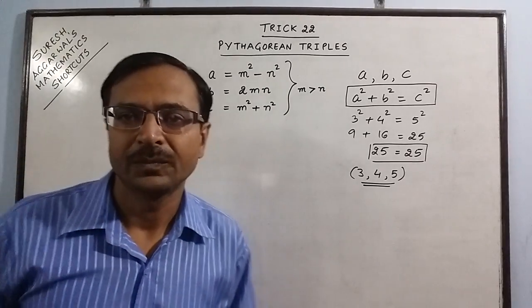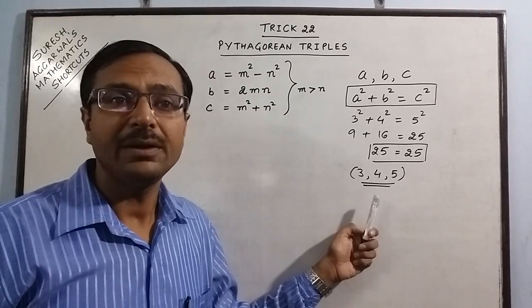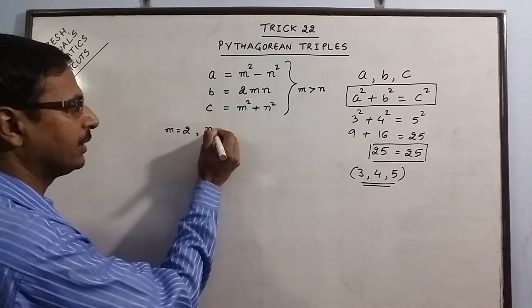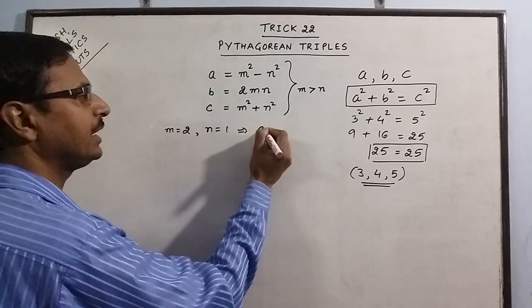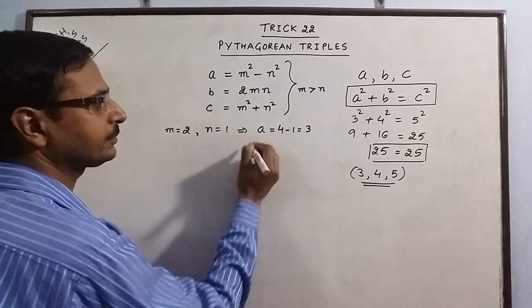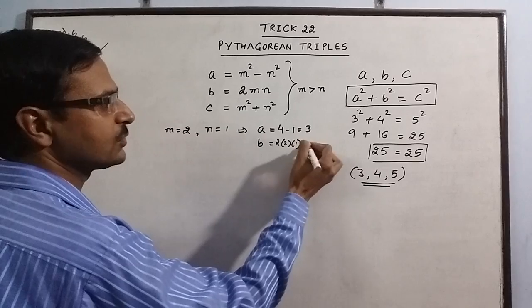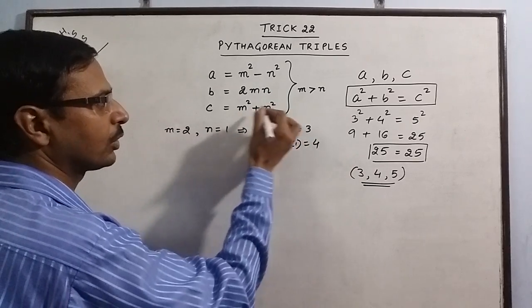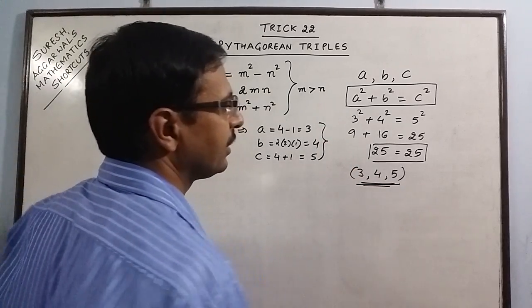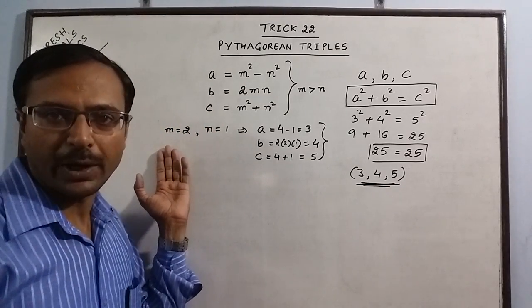Let us take one example. I have told you the basic Pythagorean triplet is 3, 4 and 5. That is obtained by putting M equal to 2 and N equal to 1. If we put this in A, you get 2 square 4 minus 1 square 1 as 3, 2 into 2 into 1, that is 4 and 4 plus 1, 5. So this is the first Pythagorean triplet which we talked of earlier. It is obtained by putting M equal to 2 and N equal to 1.